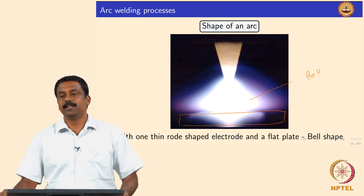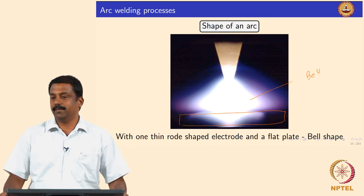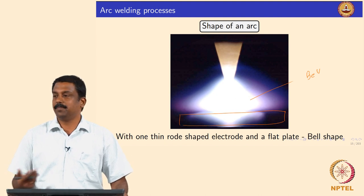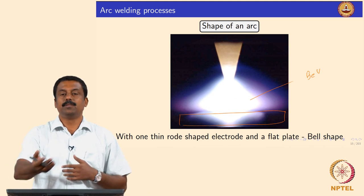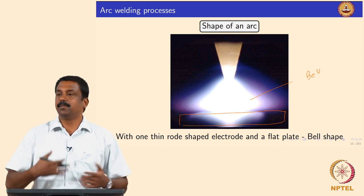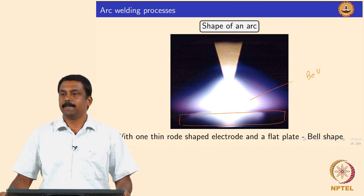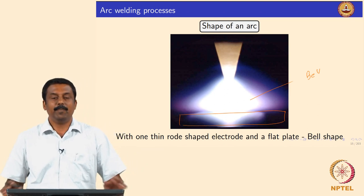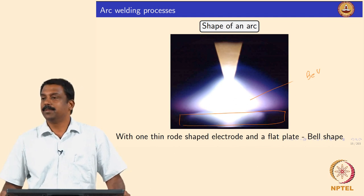Based on the polarity of your electrode and base material, electrons would be travelling from the cathode to anode — negative to positive. The cathode generates and emits electrons, and the emitted electrons from the cathode would travel to the anode.